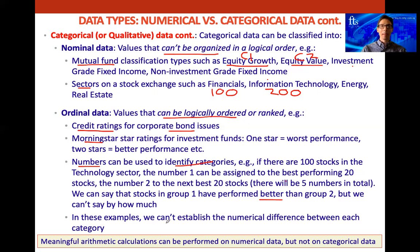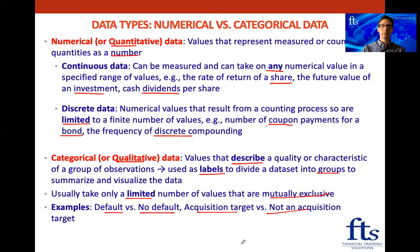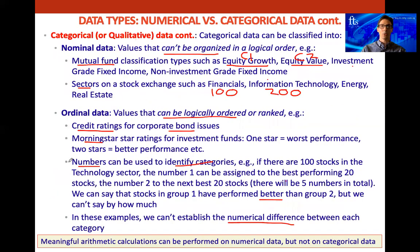In these examples, we can't establish the numerical difference between each category because these are not numerical data. Meaningful arithmetic calculations can be done on numerical data, but we can't do calculations on our categorical or qualitative data.